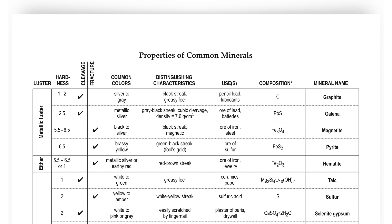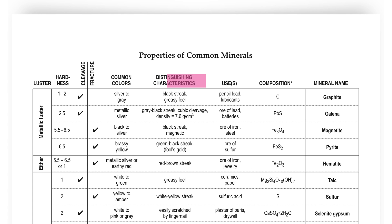I've gone over a lot of this content in other videos, so be sure to check those out. But just to run through real quick, this is essentially a table showing the most common minerals on Earth and their characteristics, including the luster, hardness, cleavage and fracture, common colors, distinguishing characteristics — which is a very important column — common uses, composition, and of course the name of the mineral.